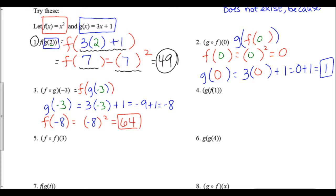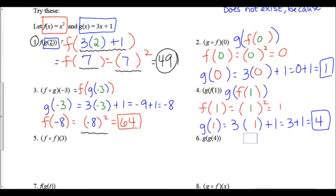Remember: when you square a negative number, a negative times a negative equals a positive. If you're doing that squaring on your calculator, you have to write it in parentheses. For number four, g(f(1)): plug 1 into f, 1² = 1, then plug 1 into g: 3(1) + 1 = 4.